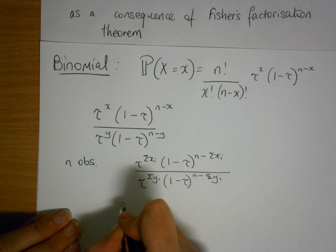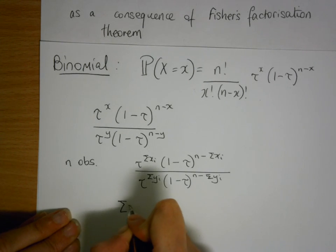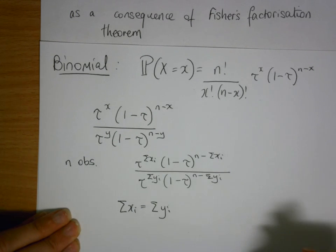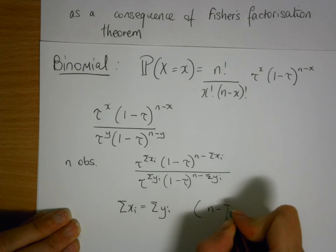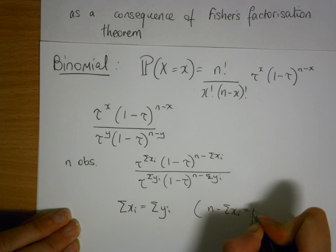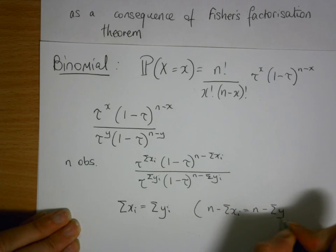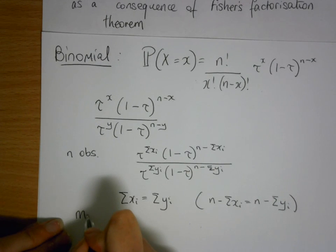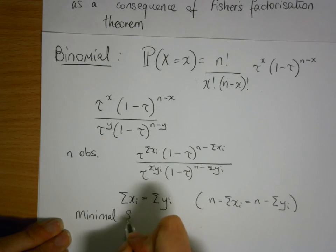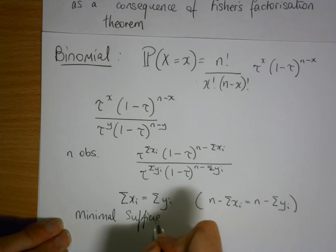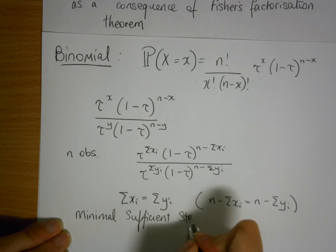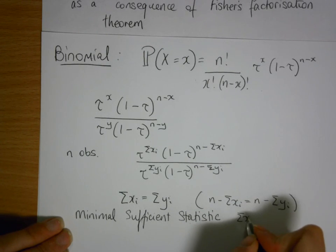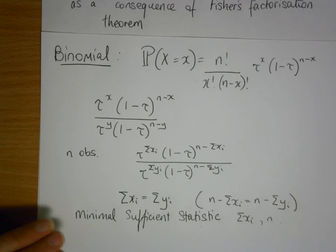If and only if the sum of xi is equal to the sum of yi, also n minus the sum of xi is equal to n minus the sum of yi, as a consequence of this statement. So your minimal sufficient statistic is the sum of xi. Well, you also need your n, of course.